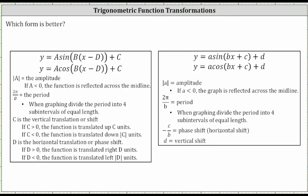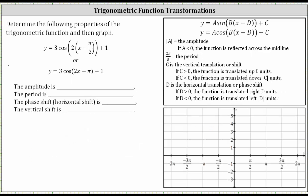Let's look at an example. Looking at these two functions, notice how if we focus on the input, the first function is in factored form. If we distribute the two, we have 2x and then minus two times pi over two, which gives us 2x minus pi. So these two functions are equivalent — one is in factored form and the other is in expanded form. Let's first find the transformations using the factored form, then verify we get the same properties using the expanded form, and then graph the function.